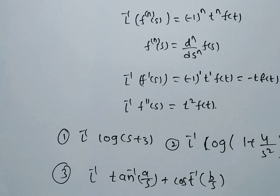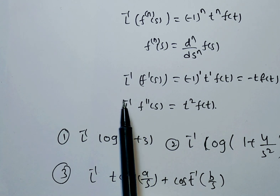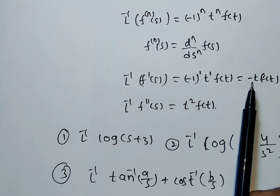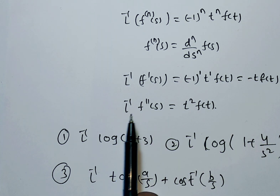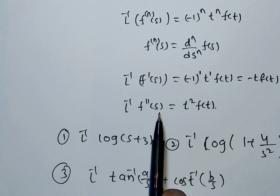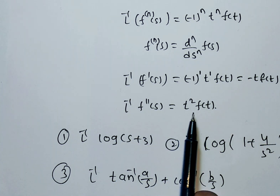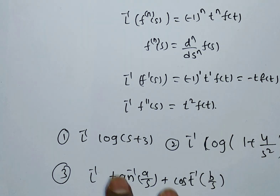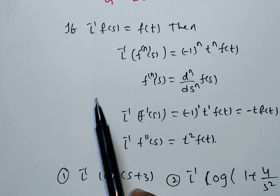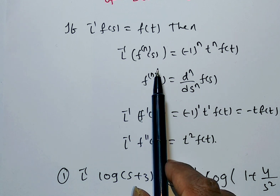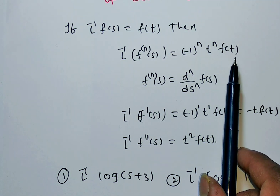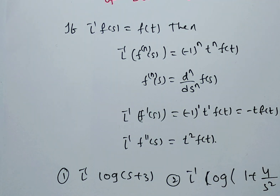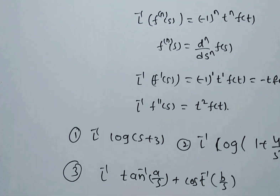Before that, note: L inverse of F dash of S equals minus T into F of T. L inverse of F double dash of S equals T squared into F of T. And in general, L inverse of F to the nth derivative of S equals minus 1 to the power n, into T to the power n, into F of T.